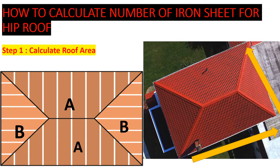This is our plan view of the hip roof. Looking at it from the top view, it forms a trapezium on this side and this side, and then a triangle on each of the remaining sides. That is what we have here.